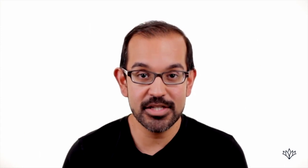I used to find problems like this so difficult — I hated trying to figure out how to do them, and I'm going to show you how to make them so much easier. This one says: a ball is dropped from a height of 512 inches onto a level floor. After the third bounce, it is still 216 inches off the ground. Presuming that the height the ball bounces is always the same fraction of the height reached on the previous bounce, what is that fraction?